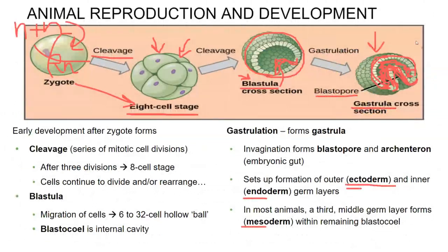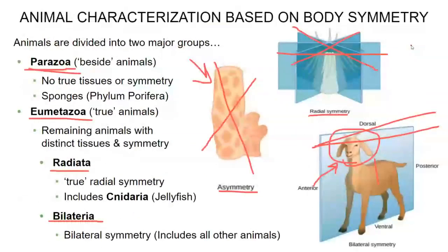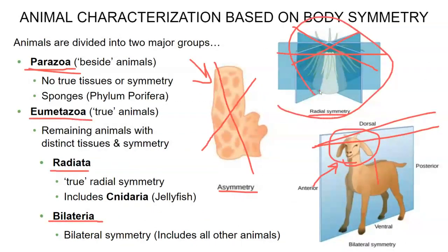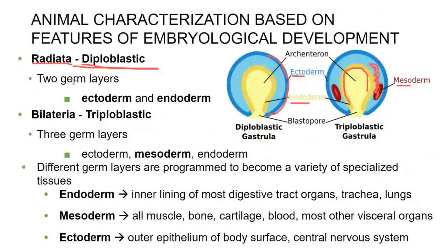Going back to the gastrula, there are different types of tissues. We already talked about ectoderm — ecto meaning the outside. Endoderm — endo meaning the inside. And mesoderm — meso meaning the middle — which develops in the open space in the middle. Radiata animals with radial symmetry are mostly going to be diploblastic, meaning they only have two germ layers: ectoderm and endoderm. Whereas bilateral animals are almost always triploblastic — they have three germ layers: ectoderm, mesoderm, and endoderm.